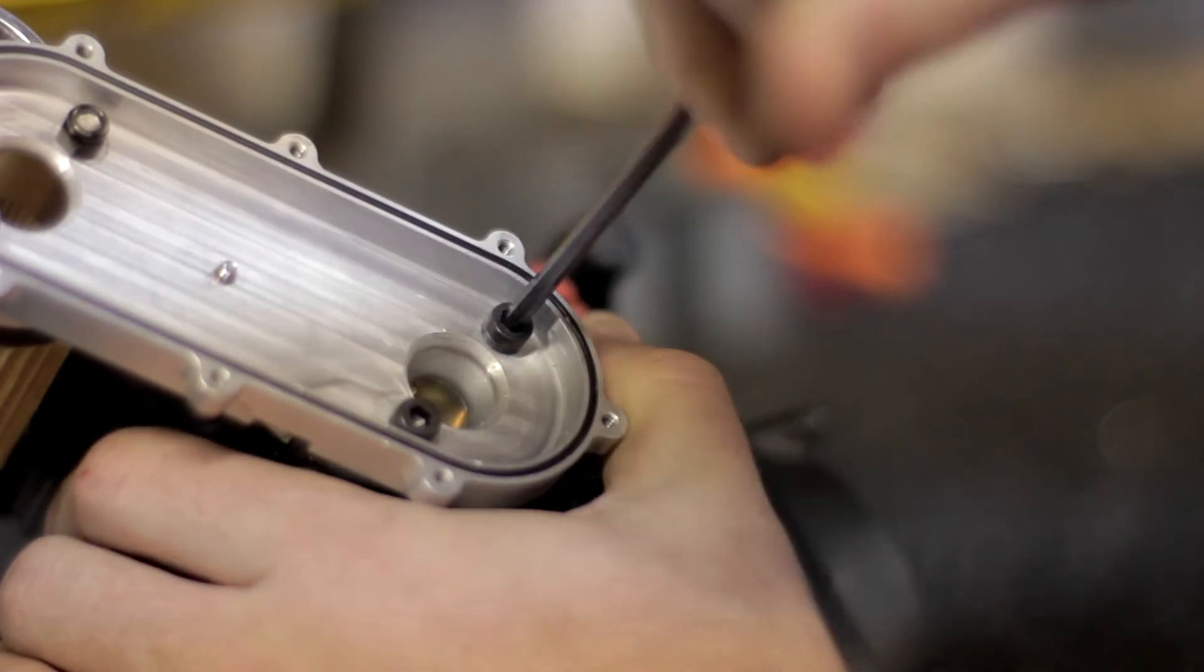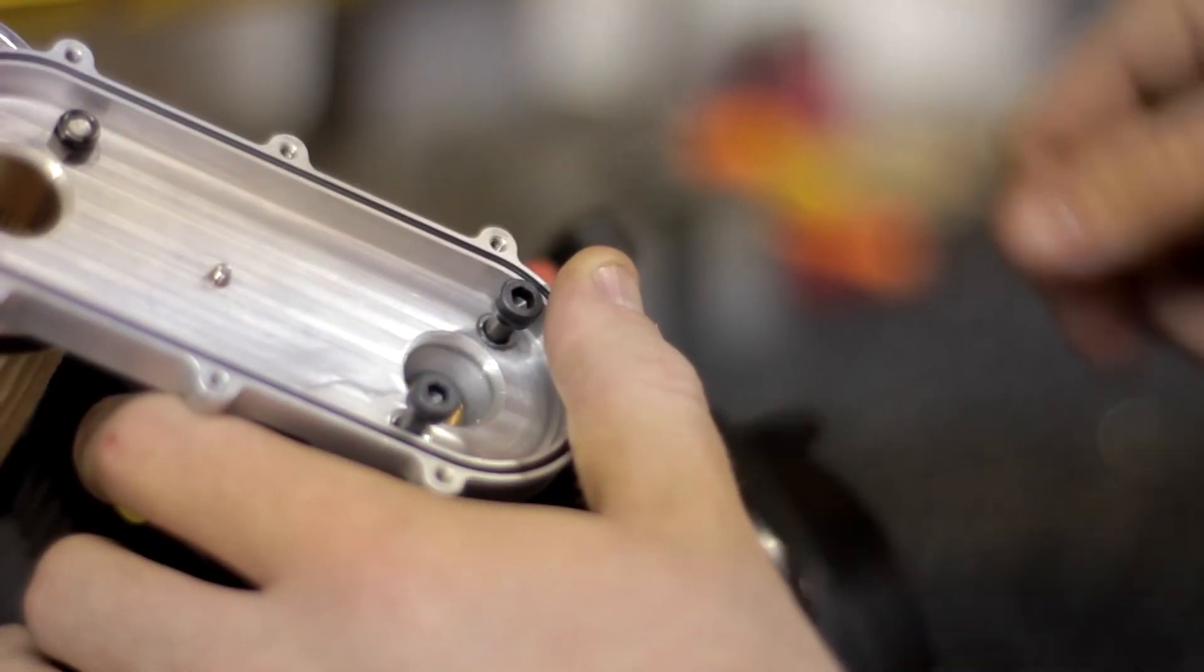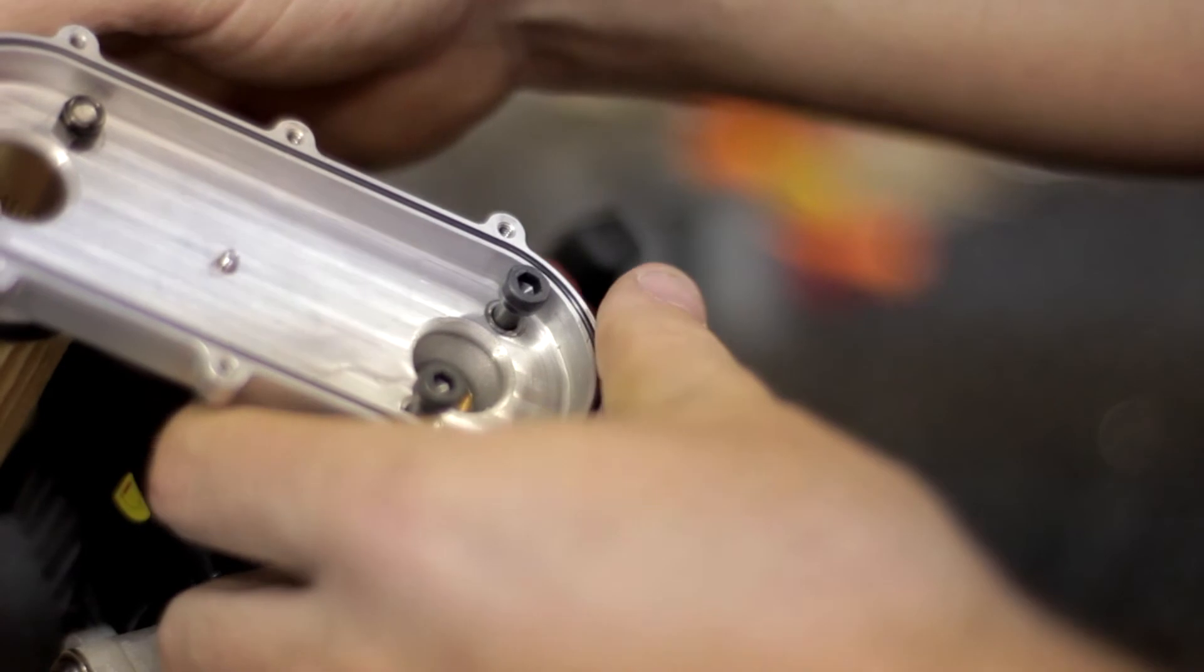The first thing you want to do is remove the two bolts that are holding your air filter and your carburetor in place. You want to remove both the air filter and the carburetor assembly.